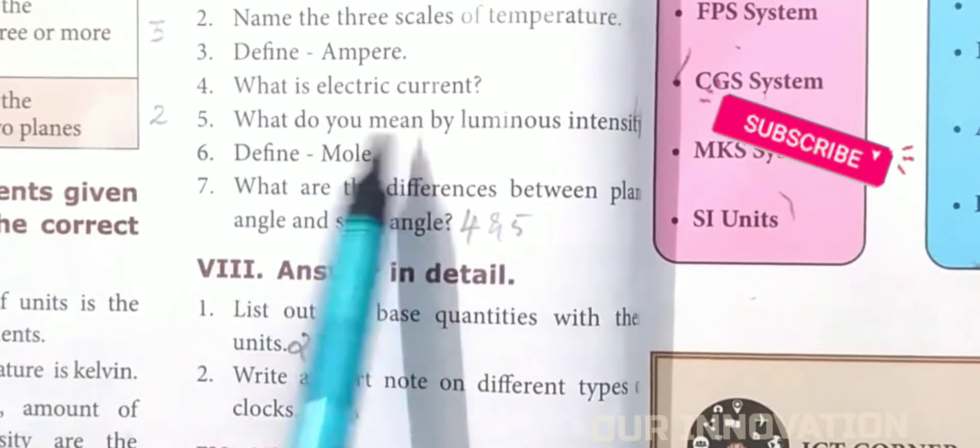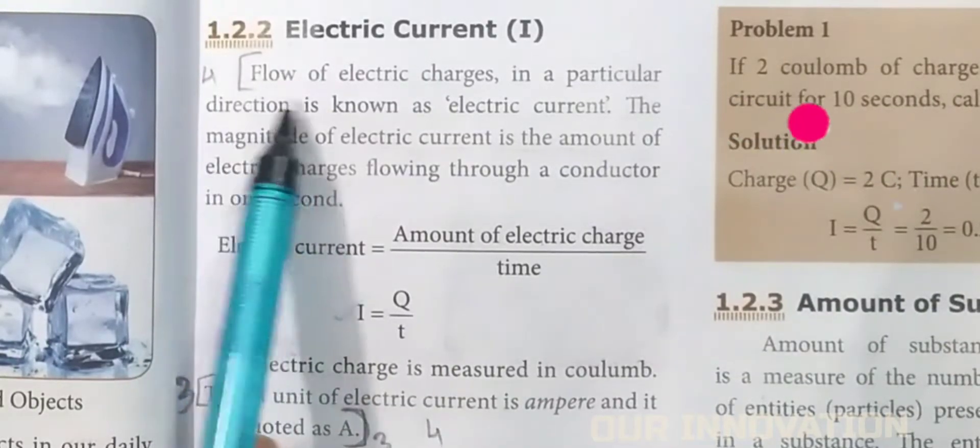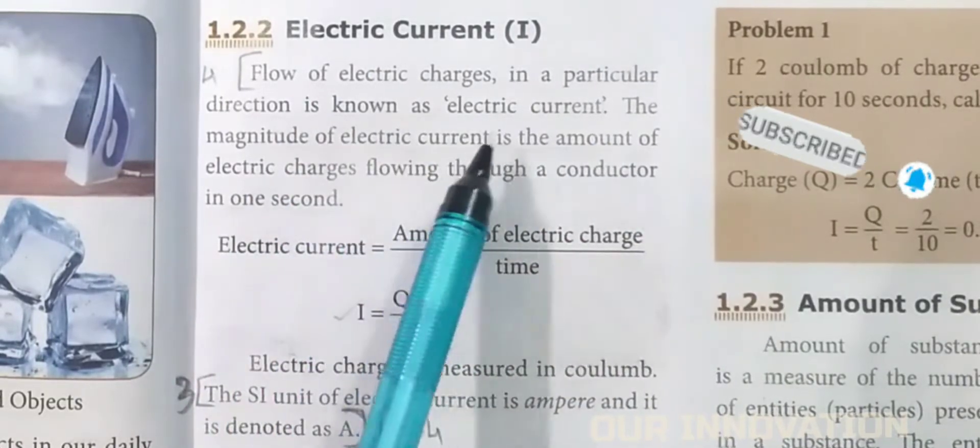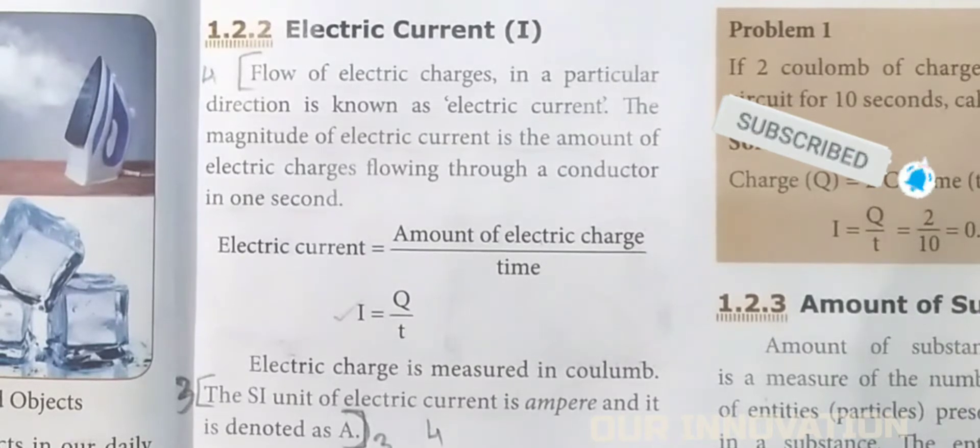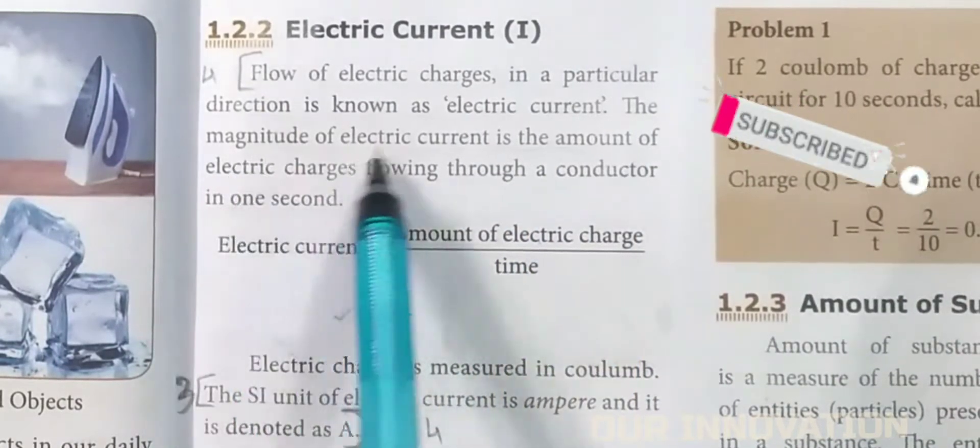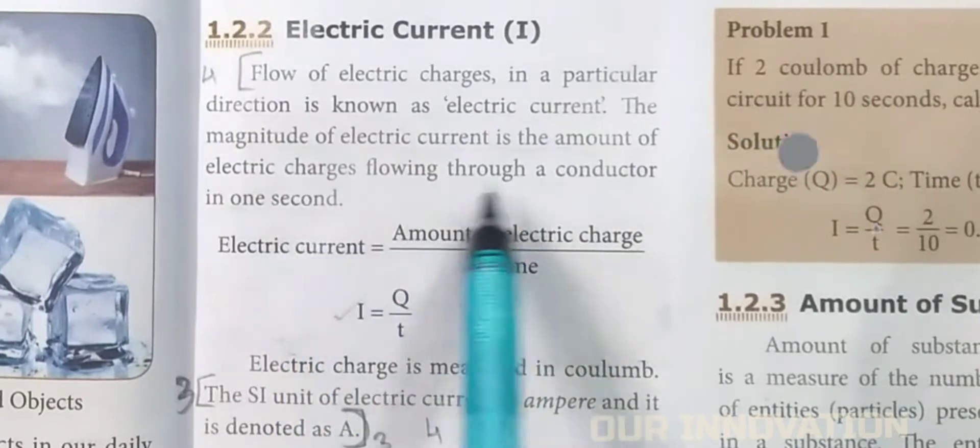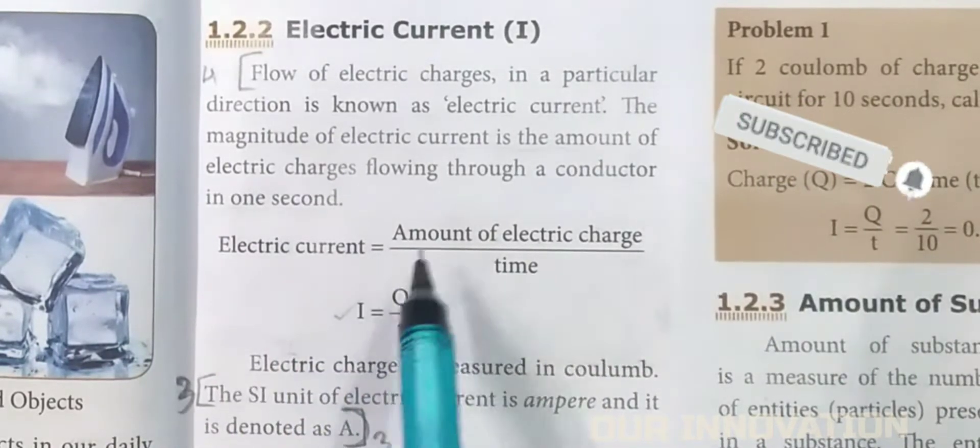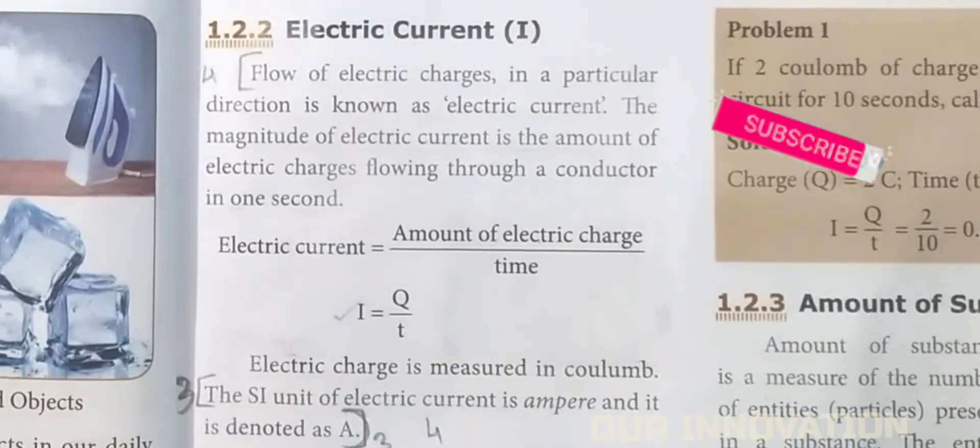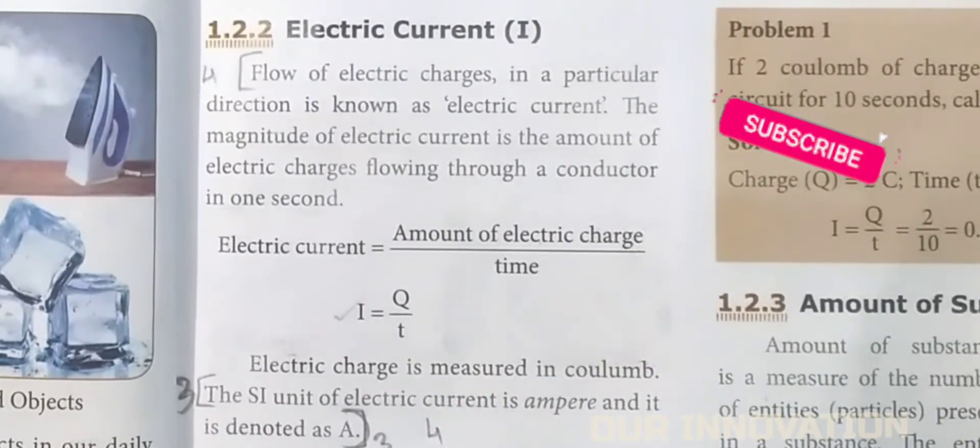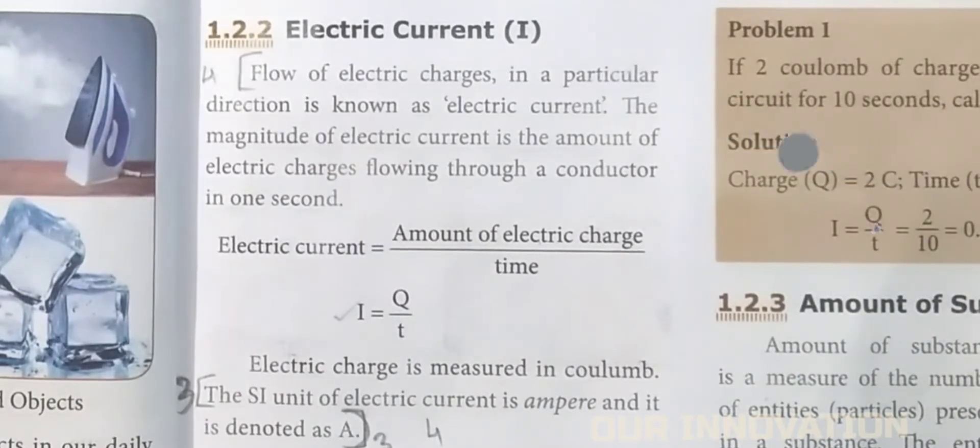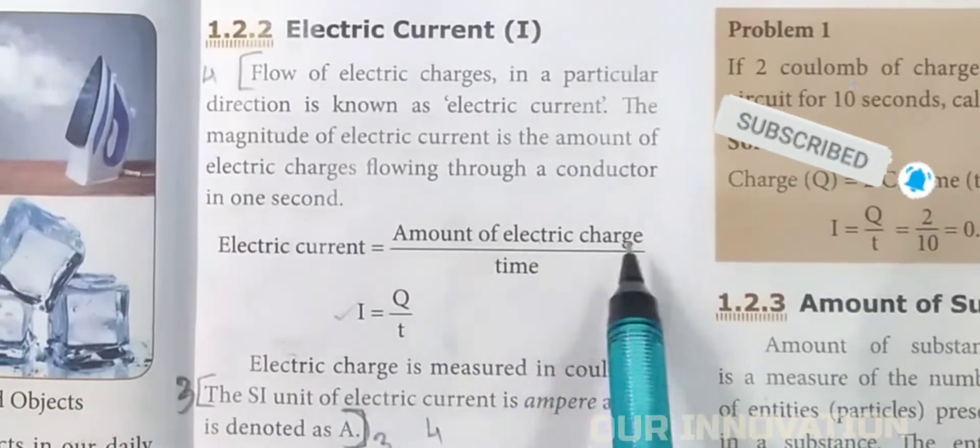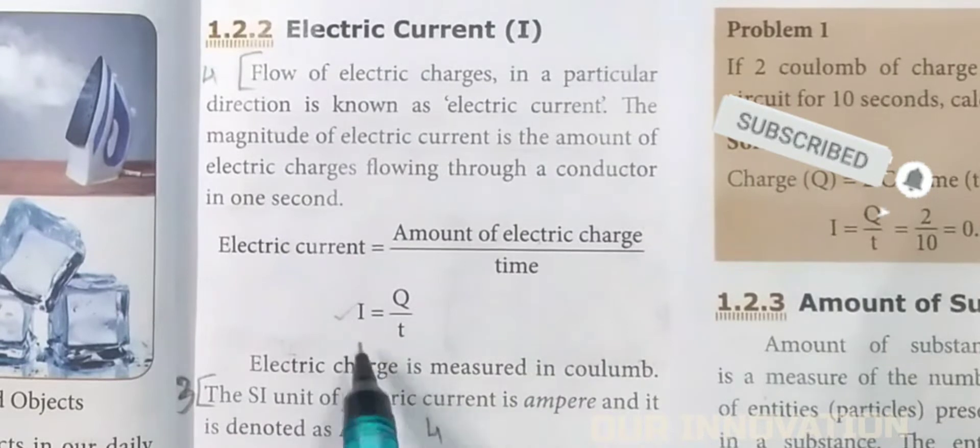What is electric current? Page number 3: Flow of electric charges in a particular direction is known as electric current. The magnitude of electric current is the amount of electric charges flowing through a conductor in one second. So electric current I is equal to amount of electric charge Q by time t.